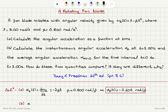This is our angular acceleration as a function of time, and we need to evaluate the answer found in Part A at t equals 3.00 seconds. When I substitute t equals 3: minus 1.6 times 3 gives us minus 4.80 radians per second squared.